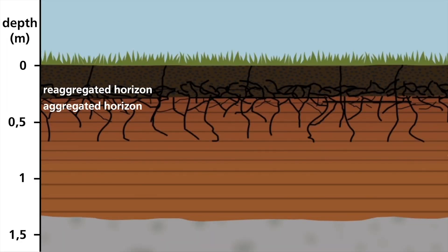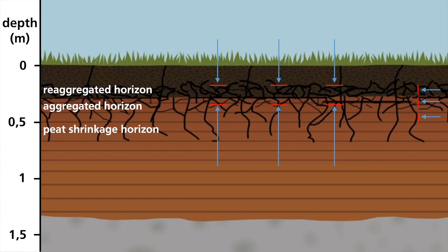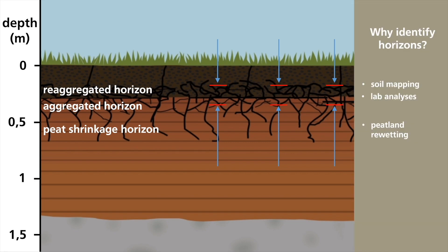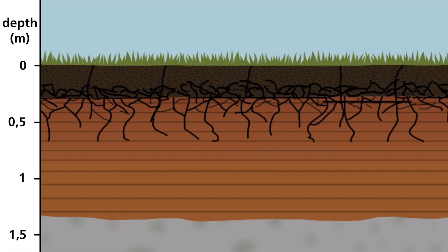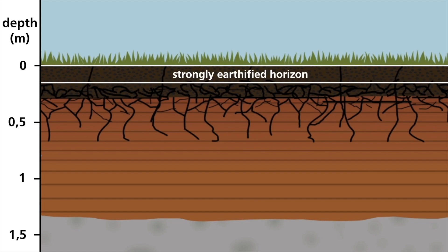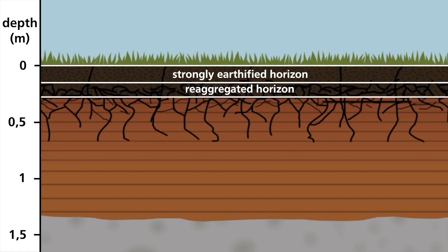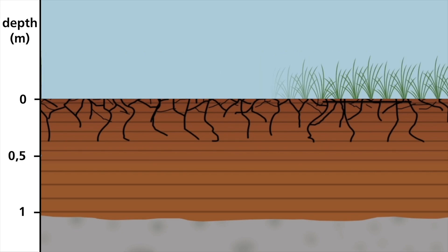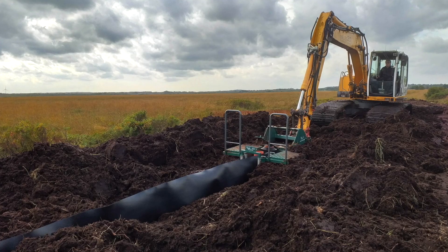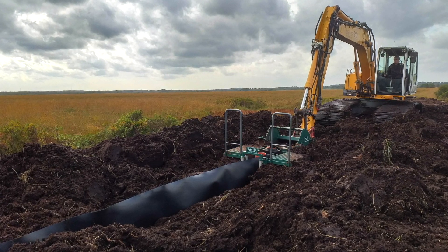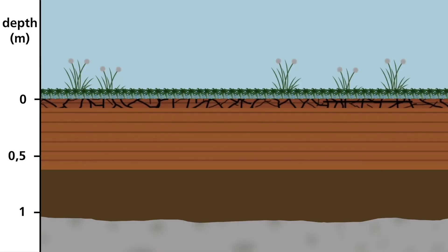Furthermore, re-aggregated and peat shrinkage horizons are known to obstruct either the vertical or the lateral water flows through the peat. This has to be taken into consideration when regulating the water table in a peatland. Water table management is relevant both for more climate-friendly cultivation and for the restoration of peatlands. Another important aspect is assessing the depth of earthified and strongly earthified horizons and, more generally, all horizons influenced by tillage. These layers have high nutrient concentrations following the application of fertilizers, and generally need to be removed if typical mire vegetation is to be successfully re-established.